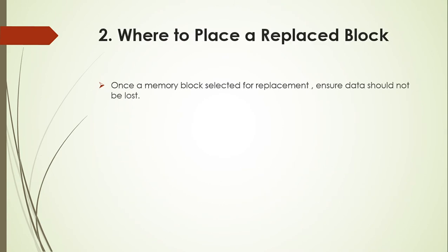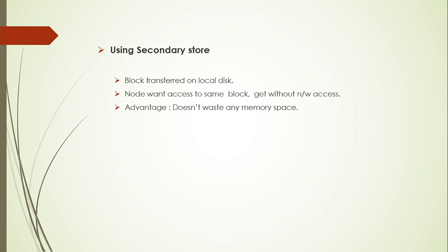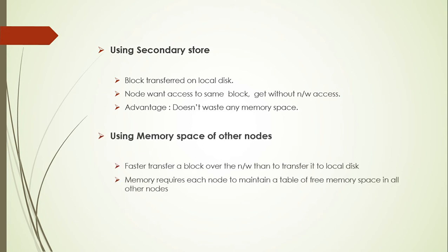The question of where to replace a block must ensure that the selected block does not lose its data. Two solutions are provided: first, using secondary storage — this does not require any network access and does not waste excessive memory space. Second, using the memory space of another node — this is faster compared to transferring to local disk, but requires each node to maintain a table of free memory space in all other nodes.